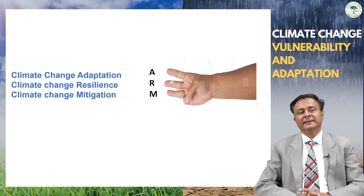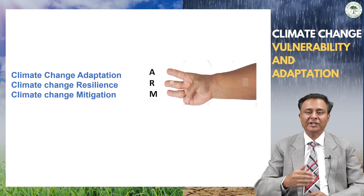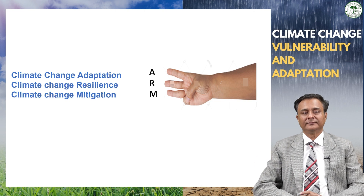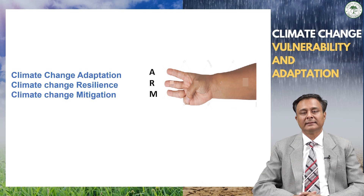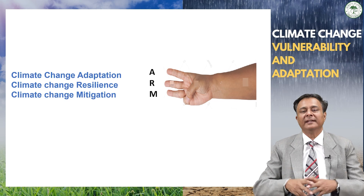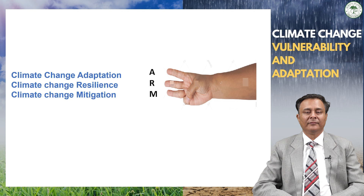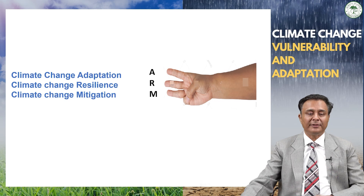I will try to explain the ARM of climate change. These three words: A is for Climate Adaptation, R is for Climate Resilience, and M is for Climate Mitigation. So, Adaptation, Resilience and Mitigation — they are everywhere. They are crucial to climate change discussions, but they can also be a bit of jargon. In this lecture, I would try to simplify climate adaptation, resilience and mitigation strategies — what they actually mean and why these terms are used so widely.